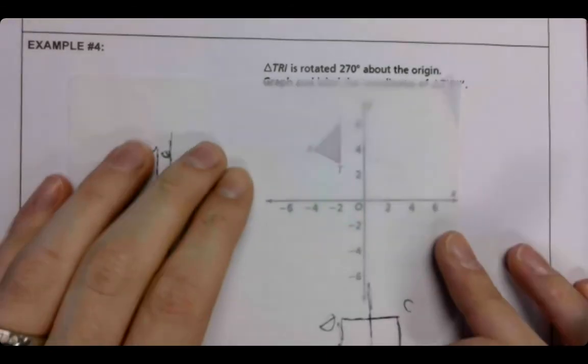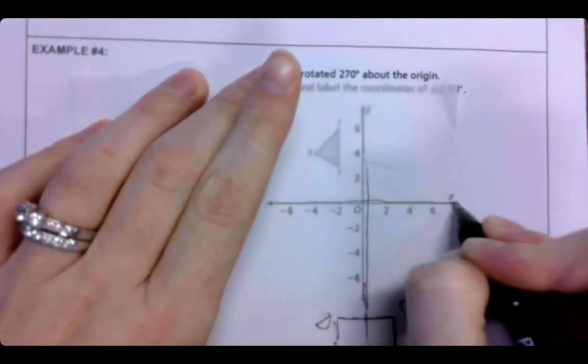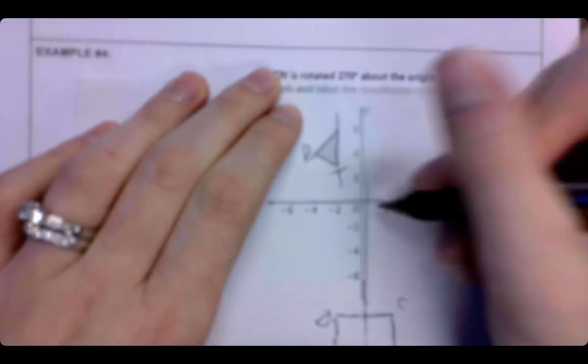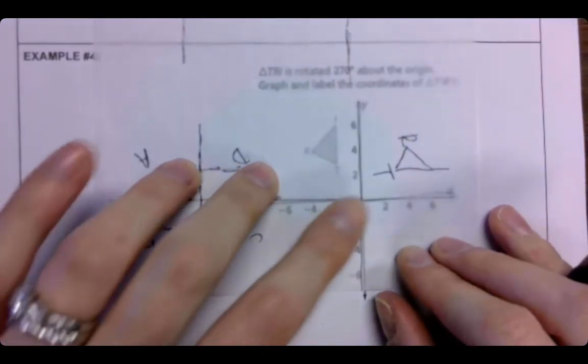Welcome back. We should have done the x and the y. Had our RIT. 270 degrees positive means that we did it counterclockwise. One, two, and three.